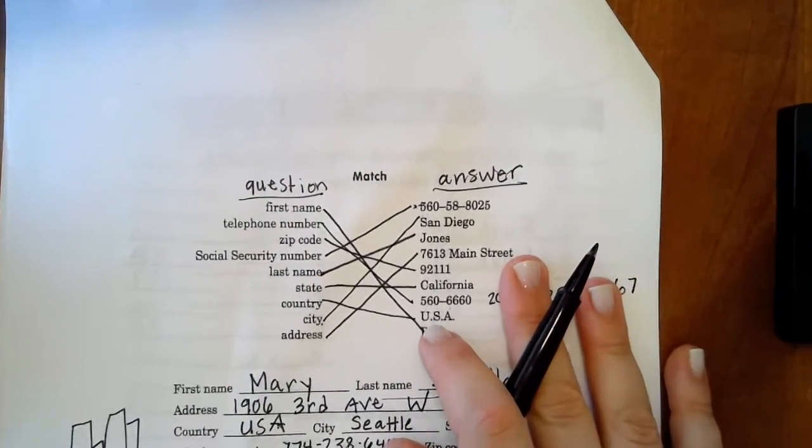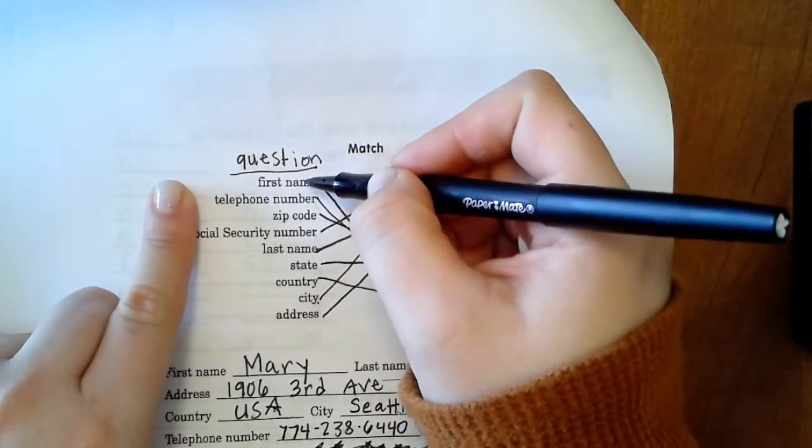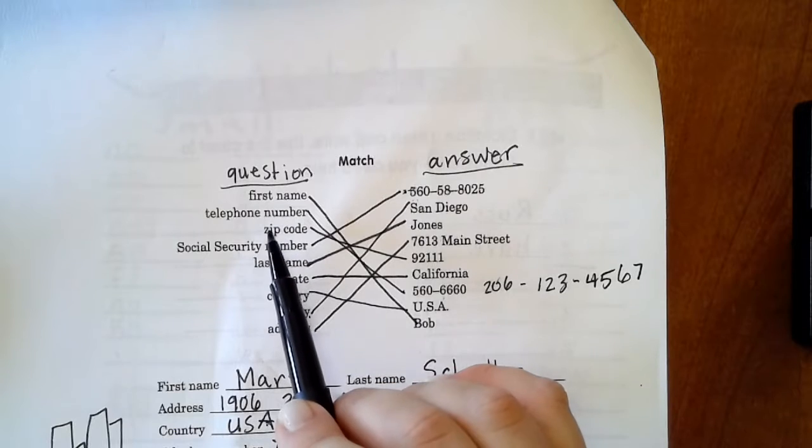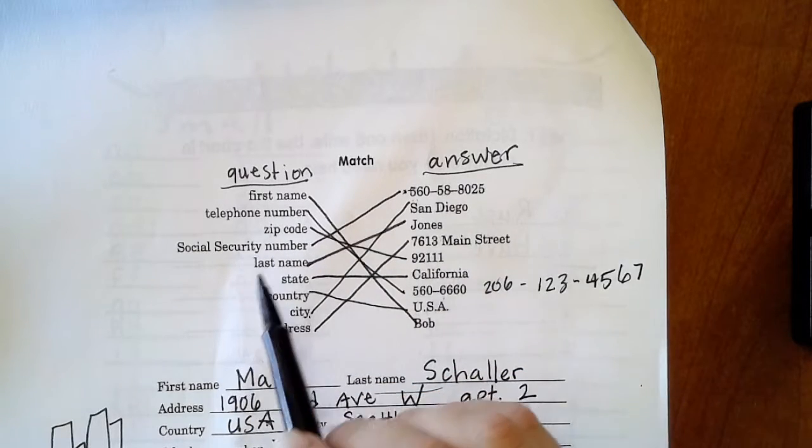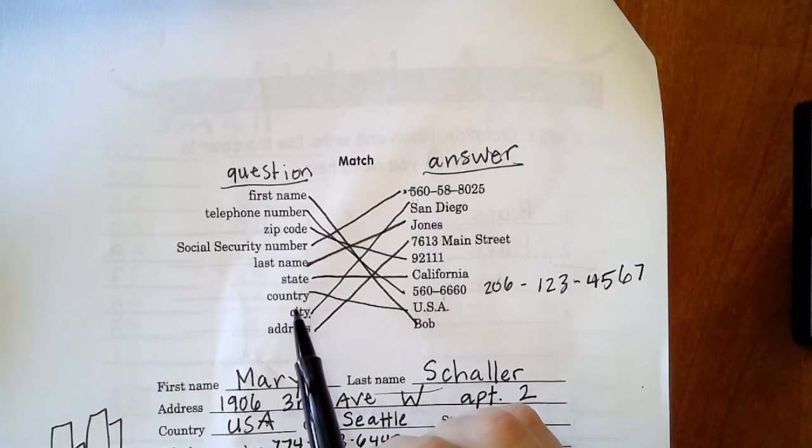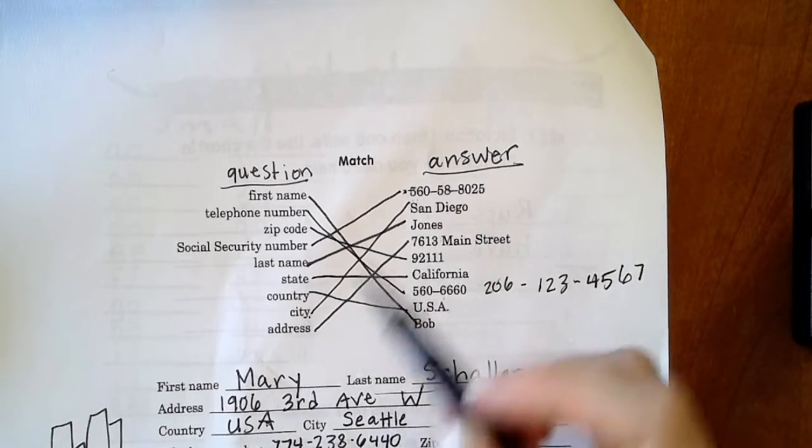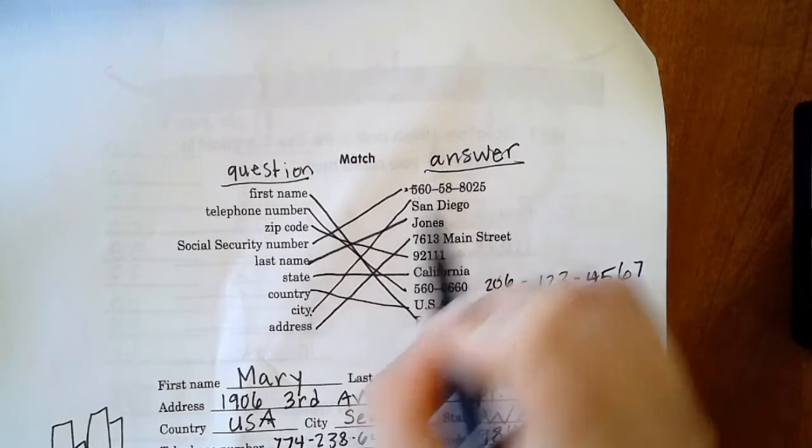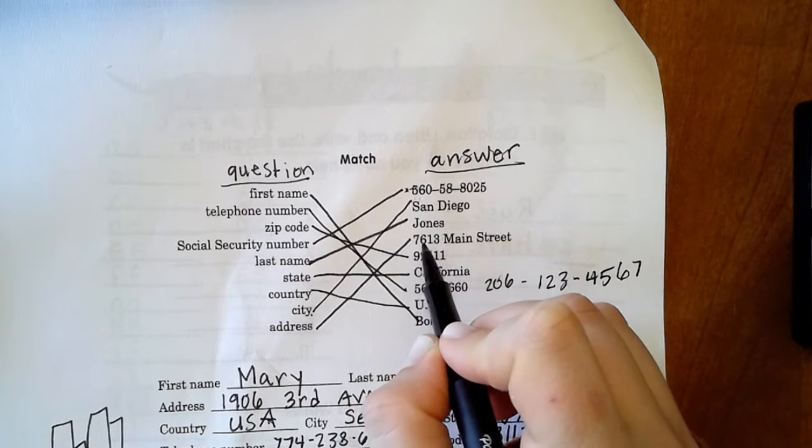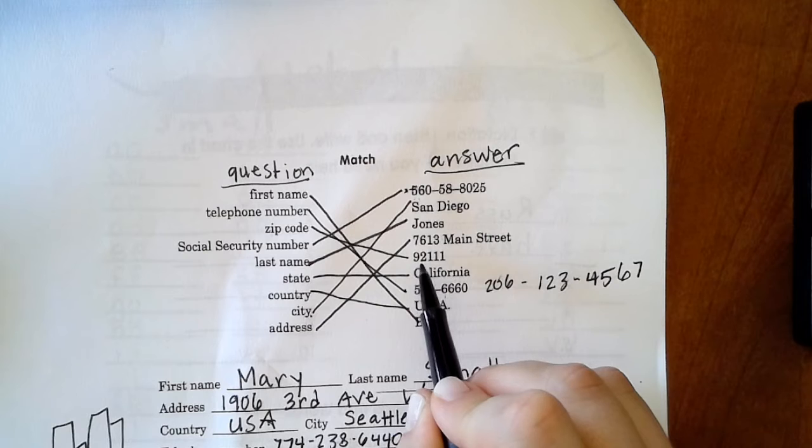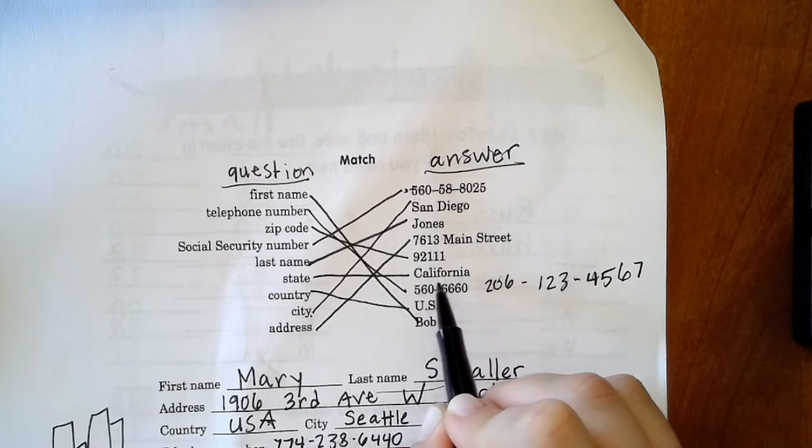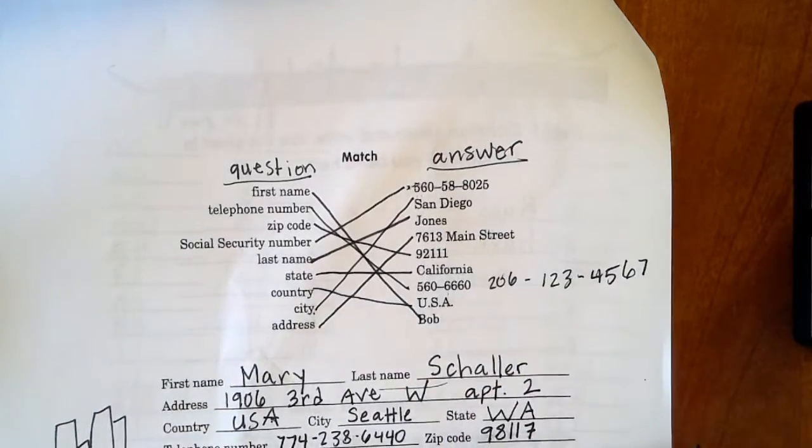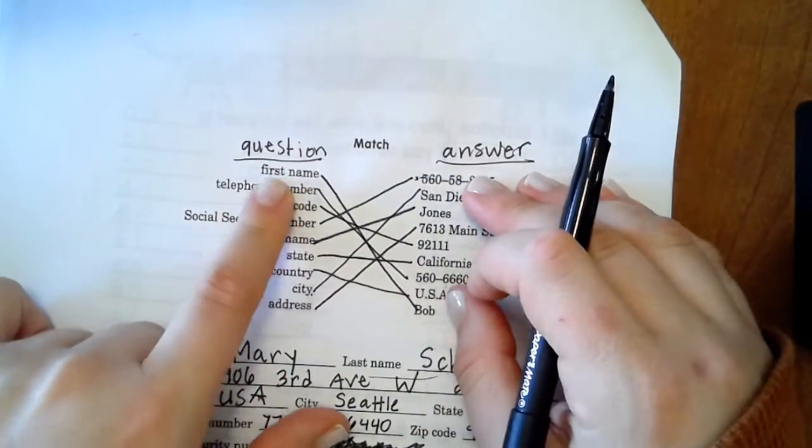Now go up here. So here we have personal information questions and then answers. On the left we have first name, telephone number, zip code, social security number, last name, state, country, city, and address. Then on the right we have 560-588-8025, San Diego, Jones, 7613 Main Street, 92111, California, 560-66-60, USA, and Bob.